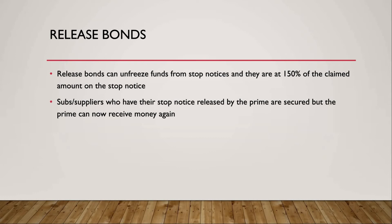Release bonds: once a stop notice is filed, the prime contractor can get a release bond, which allows them to receive money again from the owner, lender, or bank. The prime will be charged about one hundred and fifty percent on the amount owed, and this gets bonded so that everyone is guaranteed payment. They'll also have to sign paperwork committing to pay off what they owe. This protects the subs, suppliers, and clients as well.